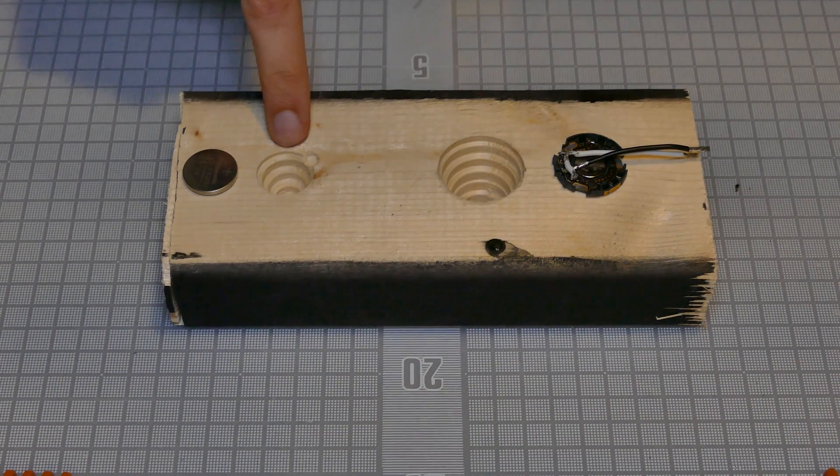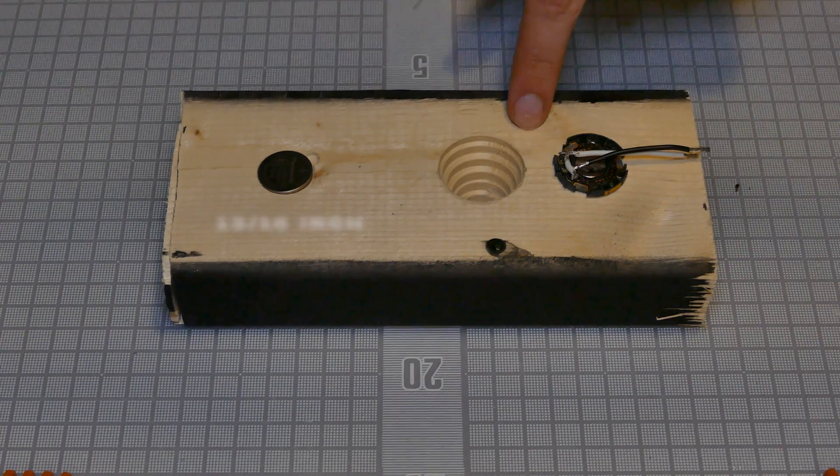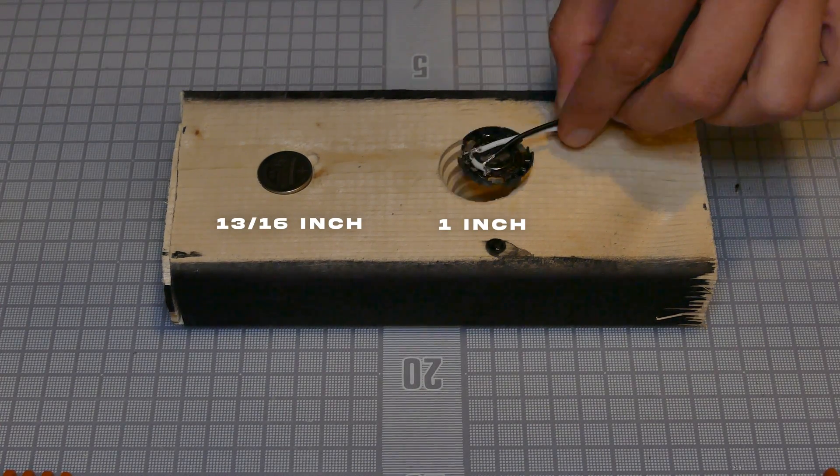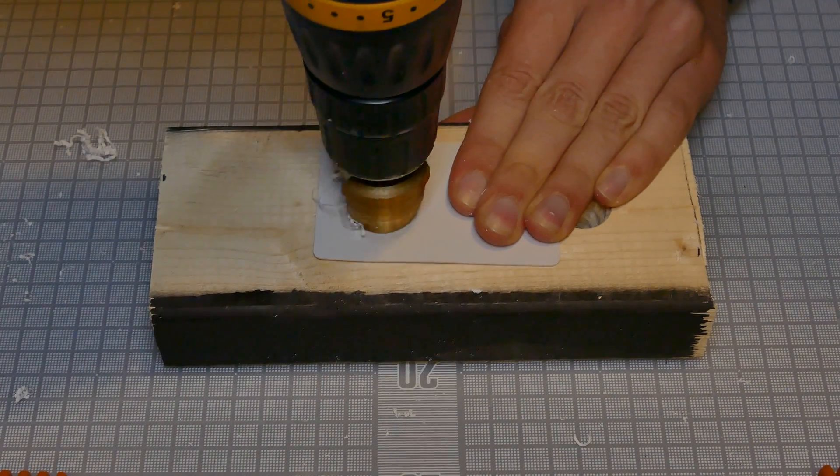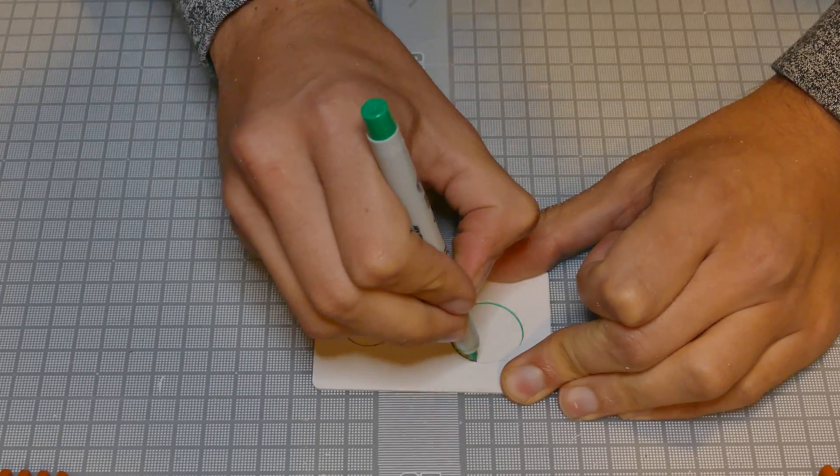I also went ahead and used a 2x4 to drill out the diameter of the battery and the PCB. The diameter for the battery was 13/16ths of an inch, and the PCB was a little over an inch. I then started to drill out the holes in the card, and once I did that, I traced out the rest of the holes with a sharpie.